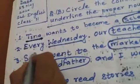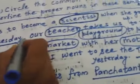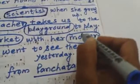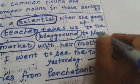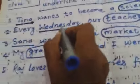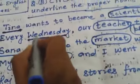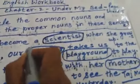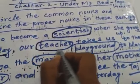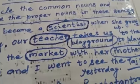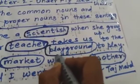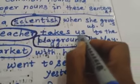Next sentence: 'Every Wednesday, our teacher takes us to the playground to play.' Here, 'Wednesday' refers to a specific day, so it is a proper noun — we underline it. 'Teacher' is a common noun in this sentence — we circle it. 'Playground' is also a common noun — we circle it too.